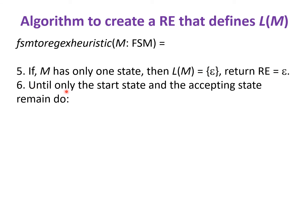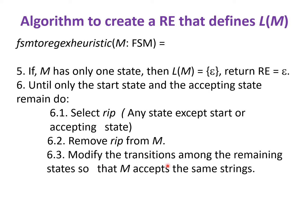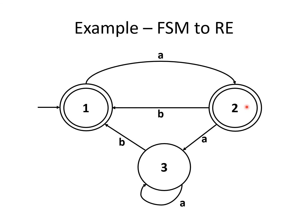Step 6: until only the start state and the accepting state remain, select a RIP state — any state except the start state or accepting state — remove it from M, and modify the remaining transitions so that M accepts the same strings. Finally, step 7: return the regular expression that labels the one remaining transition from the start state to the accepting state. Let us apply this algorithm on this FSM and obtain the regular expression for it.